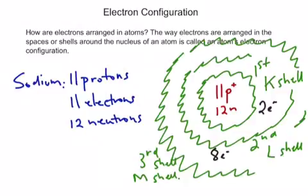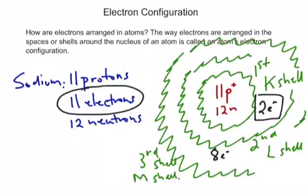So for sodium, there are 11 electrons that have to be placed. We would put 2 of those electrons into the first shell. The next 8 electrons will go into the second shell. And because there are 11, there is still one more electron to place, so it will have to go out into the third shell. So sodium has 11 protons and 12 neutrons in the nucleus, with its 11 electrons arranged with 2 in the first or K-shell, 8 in the second or L-shell, and 1 in the third or M-shell.